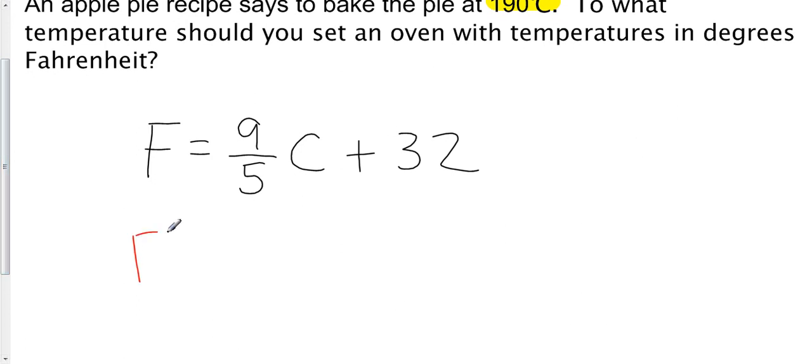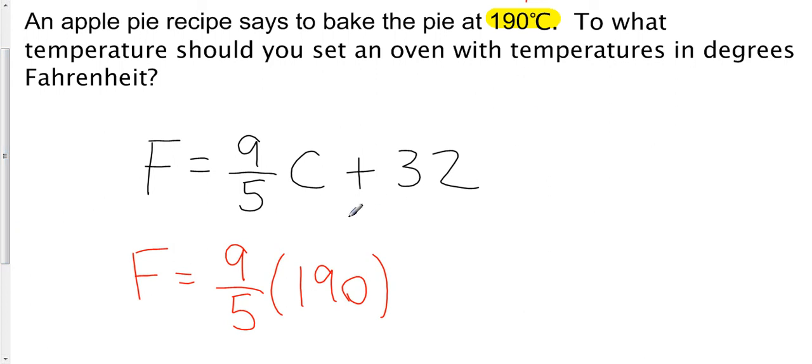And so wherever we see C in the formula, we are going to plug that in. So F here equals 9 fifths times 190. So I put up a bracket because that's where C was. So this 190 here is our C that came, and we plug that right in, plus 32.